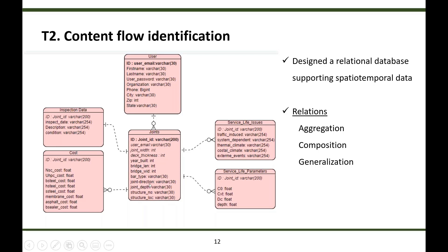Here is a snapshot of the relational database, which supports spatiotemporal datasets. There are a number of tables and relationships between them. The main tables include user, joint, service life issues, service life parameters, inspection data, and cost. In designing the relational database, we are concerned about inheritance relationships between classes — defining aggregation, composition, and generalization. One user can have multiple joints; one joint can have multiple service life issues, service life parameters, and costs. Each joint will have one inspection data record — one-to-one, many-to-one, and one-to-many relationships.